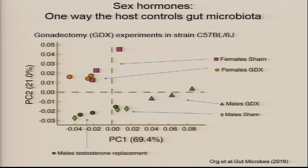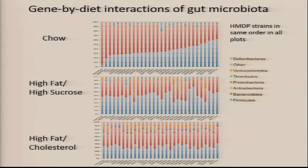I don't want to say genetics is everything, because it's not. In my own experience, diet and environment trump genetics. We've looked at about 30 mouse strains on three different diets — chow, high-fat/high-sucrose, or high-fat/cholesterol — lined up in exactly the same order. You can see a huge effect of diet. It just changes everything. Firmicutes may increase and Bacteroidetes decrease on a high-fat/high-sucrose diet.